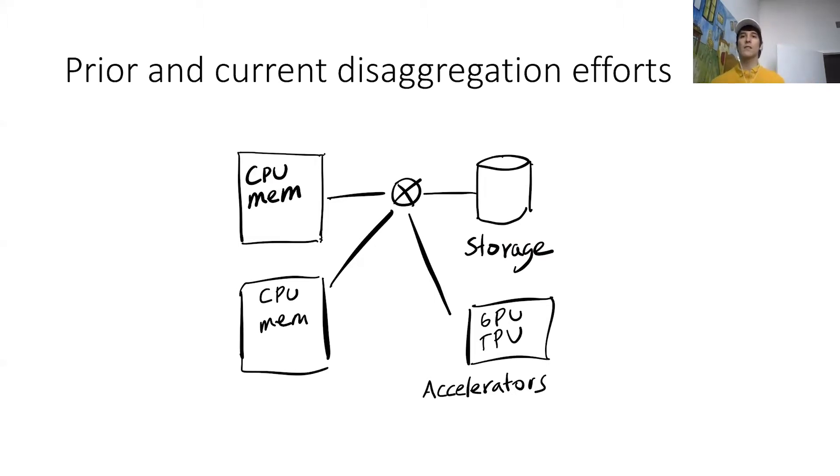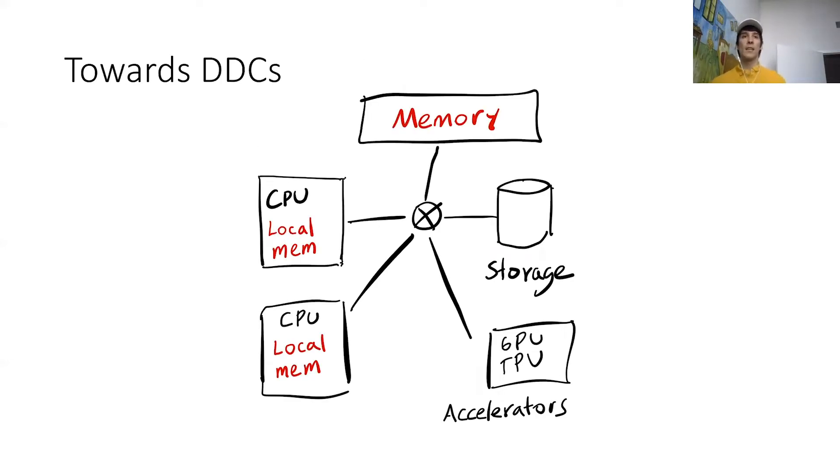In this work, however, we are interested in a more radical design in which the memory is also disaggregated. So in such disaggregated data centers or DDCs, we have servers that are going to have a bunch of processing power and some local memory. However, the bulk of the memory is going to sit off-chip on a different blade accessible through the network.